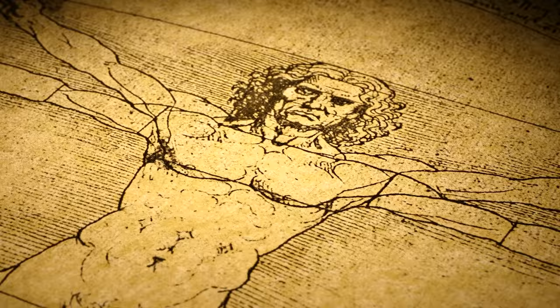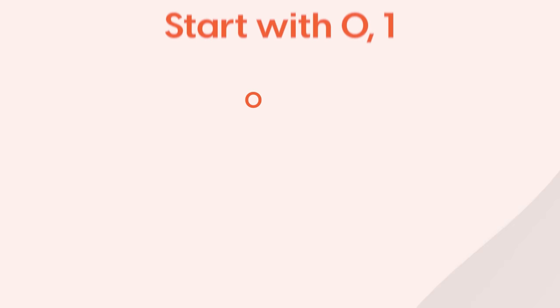The divine proportion is actually found in the Fibonacci sequence, and it goes like this: 0, 1, 1, 2, 3, 5, 8, and so on — it goes on forever. Essentially, all you're doing is taking the proportion of the last one and adding it to the new one.